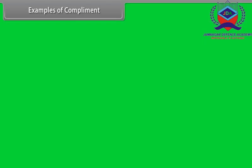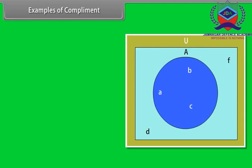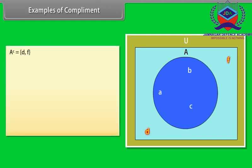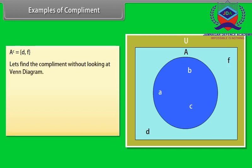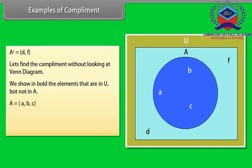Examples of complement. Take a close look at the figure. D and F are in U but they are not in A. Therefore, complement of A is equal to {D, F}. Let's find the complement without looking at a Venn diagram. We show in bold the elements that are in U but not in A. A is equal to {A, B, C}. U is equal to {A, B, C, D, F}. So, complement of A is {D, F}.